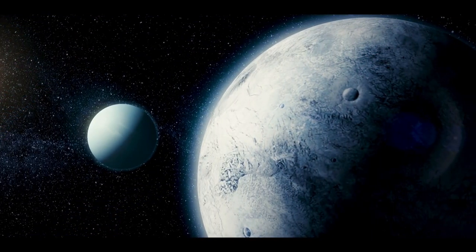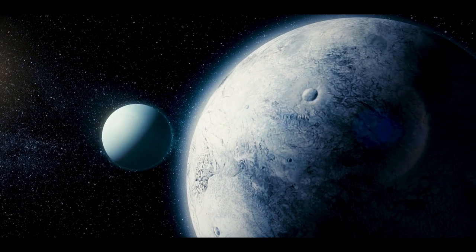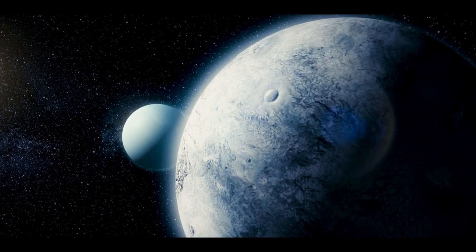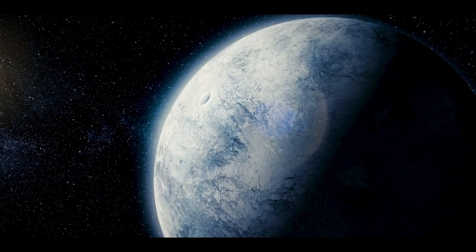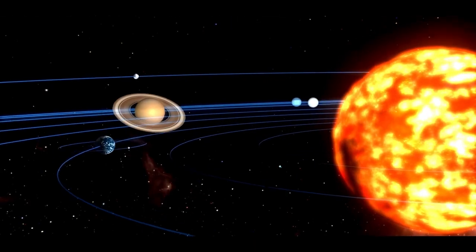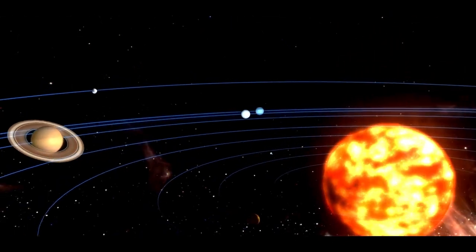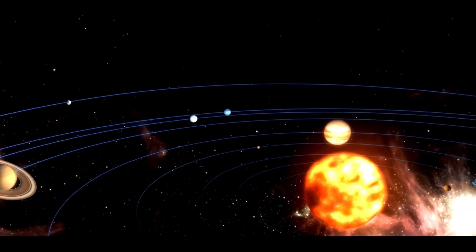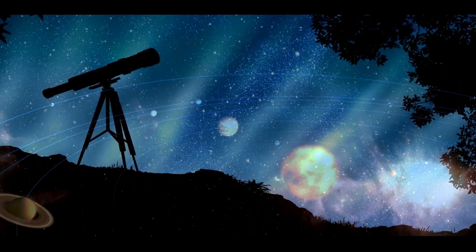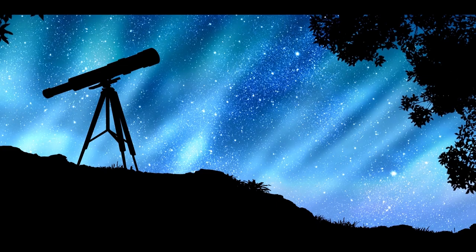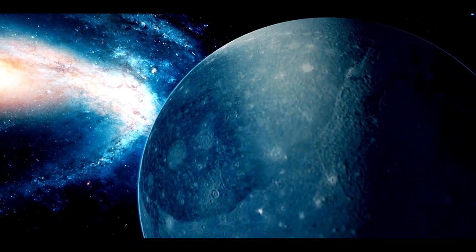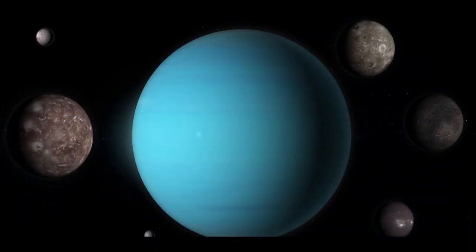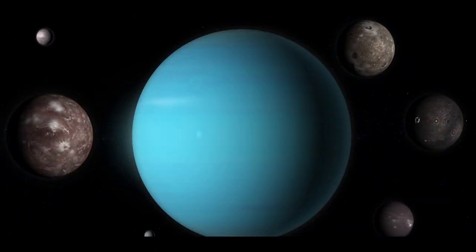The first planet found with the aid of a telescope, Uranus was discovered in 1781 by astronomer William Herschel, although he originally thought it was either a comet or a star. It was two years later that the object was universally accepted as a new planet, in part because of observations by astronomer Johann Elert Bode. William Herschel tried unsuccessfully to name his discovery Georgium Sidus after King George III. Instead, the planet was named for Uranus, the Greek god of the sky, as suggested by Johann Bode.